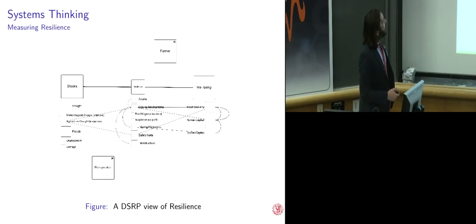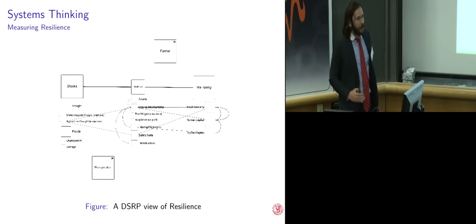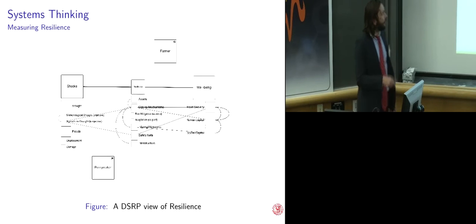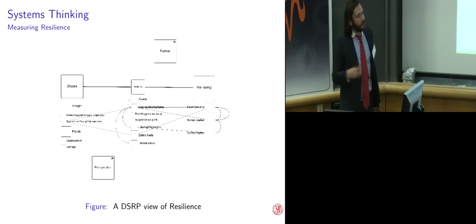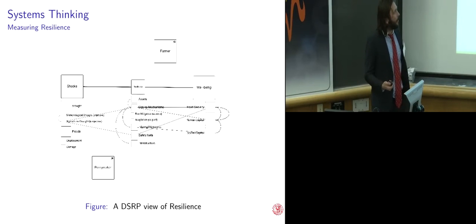Well then, taking a DSRP approach, we can think of resilience as mediating the relationship between shocks and well-being. And this is all squished together here, but within each of these components, you have a series of sub-components. Drought, floods, food security, social capital, human capital, and resilience itself, which is thought to be supported by a number of characteristics.